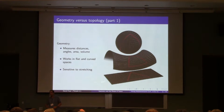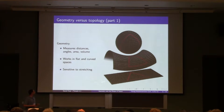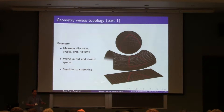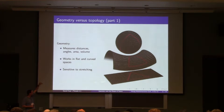Geometry and topology — let me try to explain the distinction. Geometry is the science of measurement; we've all studied it in high school. We're used to studying geometry on a flat plane or in three-dimensional space, but you can also do geometry in curved spaces. It's still the science of measuring distances, angles, areas, and volumes. Those measurements will change in a significant way if you stretch the underlying space — like grabbing a sheet and pulling it, it's still a surface but the geometry changes.